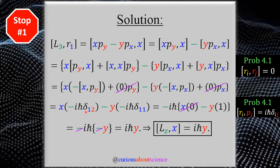We plug in the Kronecker delta. We have a blue (first component) and a red (second component) giving delta(1,2), which goes to zero, and an x,x giving delta(1,1), which evaluates to one. From there we simplify, the negatives cancel, leaving us with iℏy. Thus we conclude that the commutator [Lz, x] equals iℏy. Notice this involves indices 3, 1, and 2 — an even permutation, which the Levi-Civita symbol encapsulates.